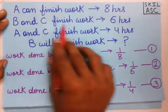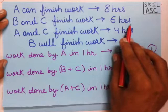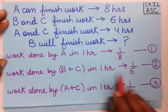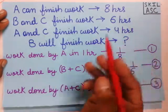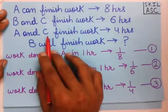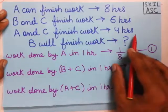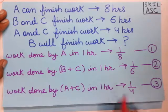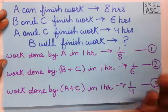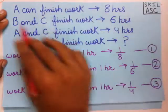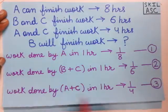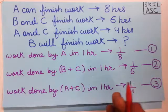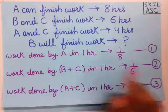Similarly, if B and C finish the work in 6 hours, then work done by B and C in 1 hour will be 1 by 6. And if A and C finish the work in 4 hours, then work done by A and C in 1 hour will be 1 by 4. Now we have converted all three statements into their work-per-hour form.